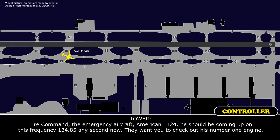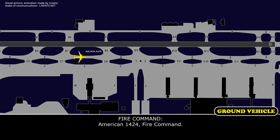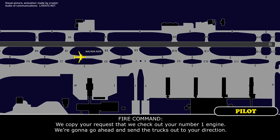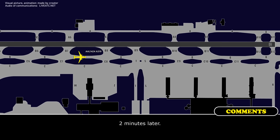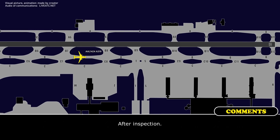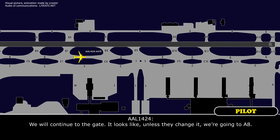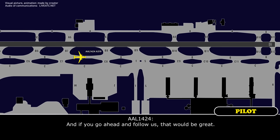Fire command, the emergency aircraft American 1424 should be coming up on frequency 134.85 any second now. They want you to check out his number 1 engine. We'll be American 1424 — we're stopping at our present position. Please check out number 1 and we'll shut down. American 1424, fire command. We copied your request to check out your number 1 engine — we're sending the trucks out to your direction. Copy, standing by, American 1424, thanks. 1424, you're confirming you're intentionally shutting down your number 1 engine? Yes, it's already shut off. Fire command — no fire, smoke, or fluids coming from your number 1 engine or anywhere on the aircraft. You're looking good.